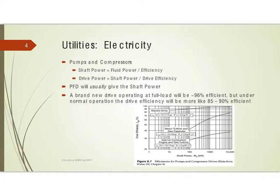We also, however, are going to need something that turns the shaft, and that's going to be a drive, which has its own efficiency associated with it. So we're going to take our fluid power, divide by the efficiency to get shaft power, then take that answer and divide by the drive efficiency to get the drive power — and the drive power is what we pay for. Typically your process flow diagram will give the shaft power, but be careful because a lot of times people calculate the fluid power and don't remember to account for the efficiency of the pump or compressor.